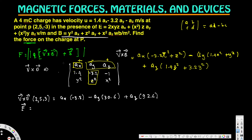The electric field is given as E equals 2xyz ax plus x²z ay plus x²y az. Evaluating at point P(2, 5, -3) by plugging in x=2, y=5, z=-3, we get E equals -60 ax minus 12 ay plus 20 az volts per meter.